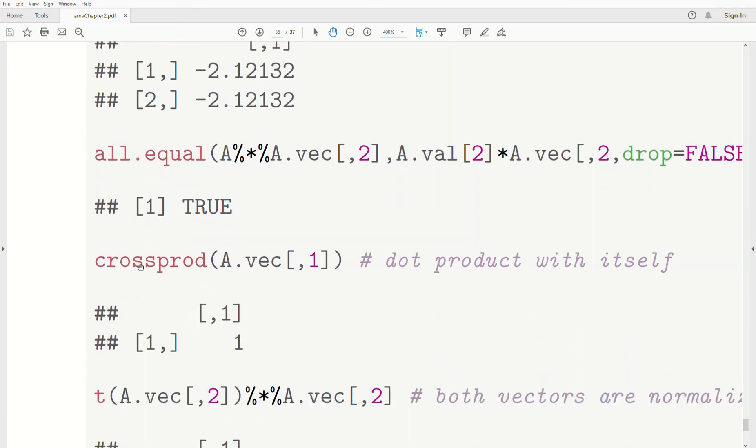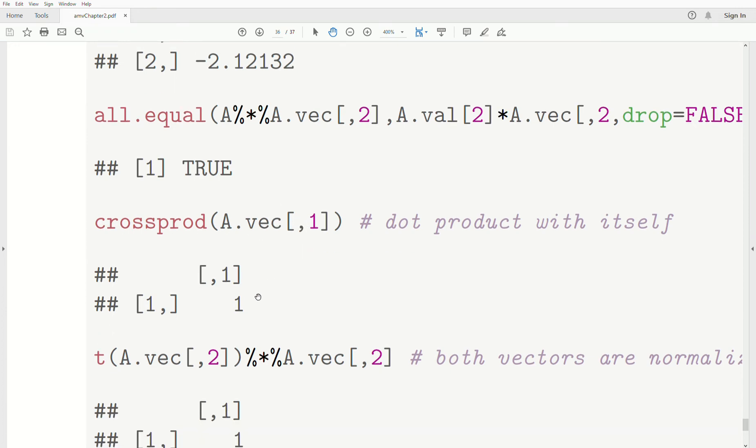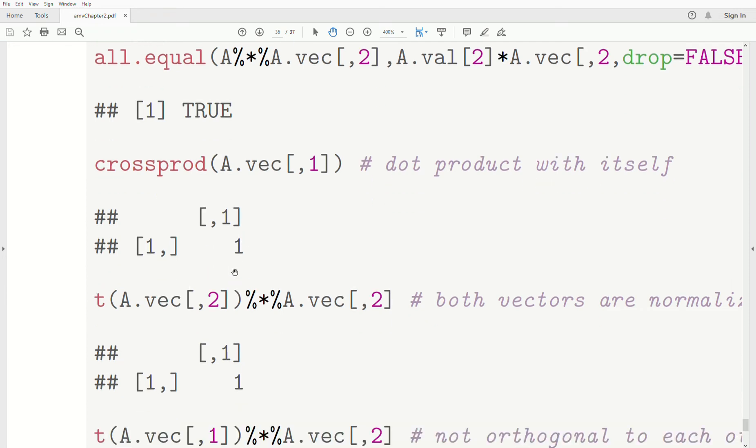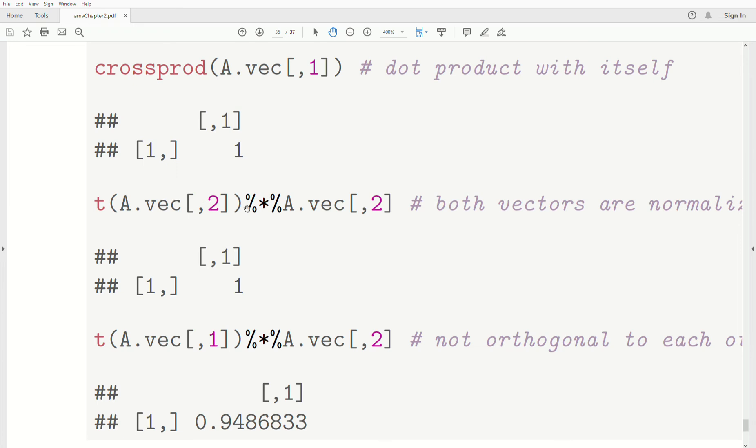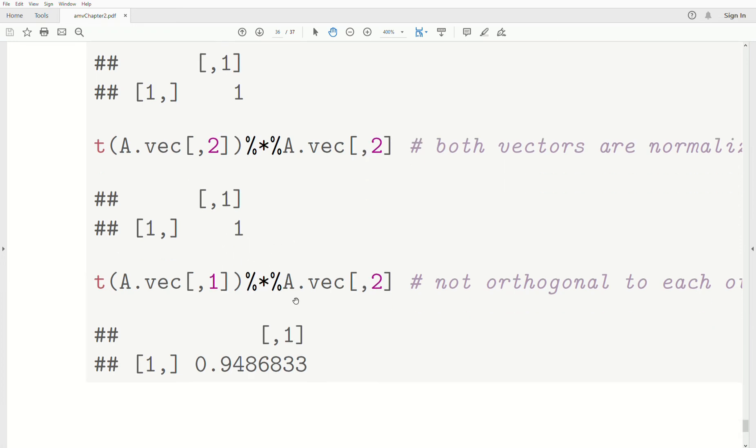Notice the dot product of itself - we can use cross product - tells us the length. We'd have to take the square root to be the length, but since the dot product is 1 and the square root of that is 1, it's also the length. So it's normalized. Vector 2 has been normalized. Note that the product of vector 1 and vector 2 are not 0, so they're not orthogonal.